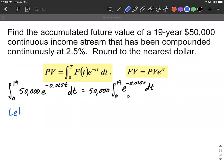So it looks like something that we're comfortable with integrating. So off to the side here, I'm going to say let u equal our inner function, so the exponent in this case, negative 0.025t. And then we're going to take the derivative. So du equals negative 0.025 dt. Now we can replace the dt in our integral here, but we don't have this negative 0.025.